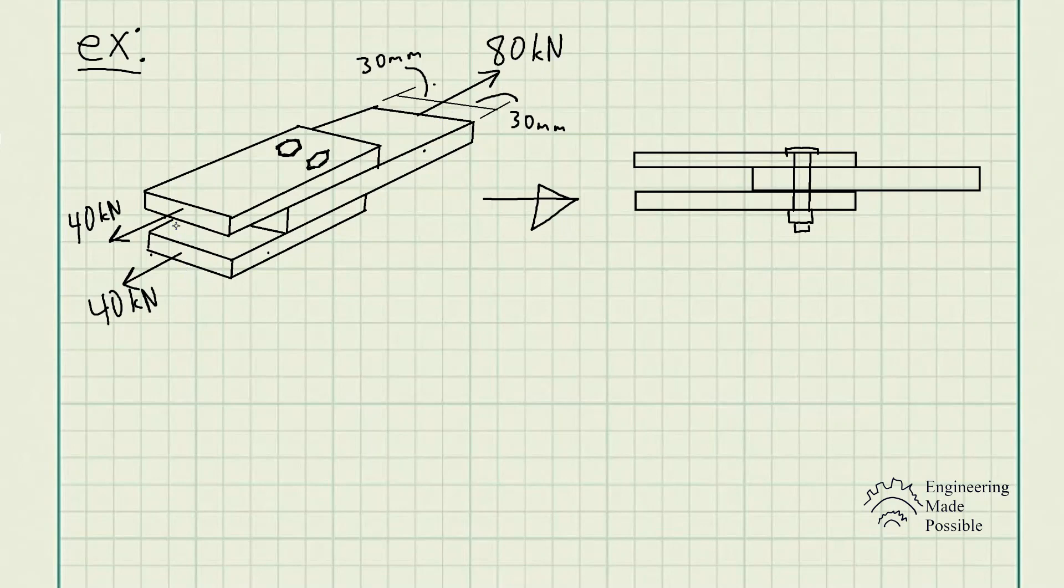The other two are also being pulled but it's divided in half: 40 kilonewtons for one plate and 40 kilonewtons for the other. This tells us it's in static equilibrium. We also see that the force is applied right at the center of the plate geometrically speaking: 30 millimeters here and 30 millimeters here.